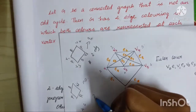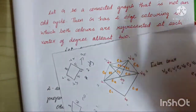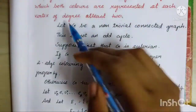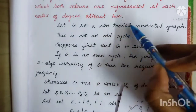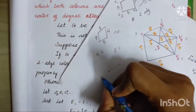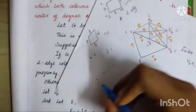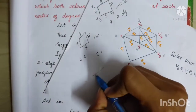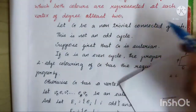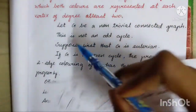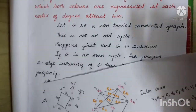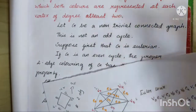We will prove that. Let G be a non-trivial connected graph. Trivial means one vertex — that is trivial. Non-trivial means more than one vertex. The connected graph is not an odd cycle; this graph is not an odd cycle and not an even cycle.